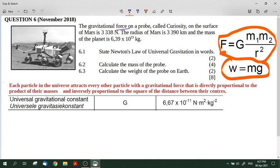State Newton's law of universal gravitation in words. That's each particle in the universe attracts every other particle with a gravitational force that is directly proportional to the product of their masses and inversely proportional to the square of the distance between their centers.